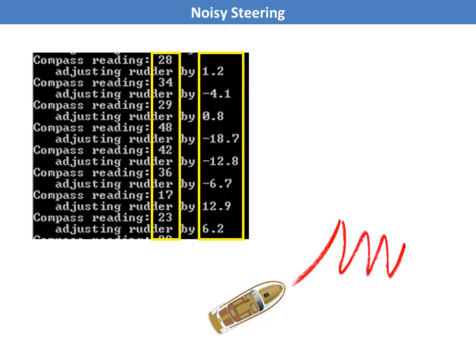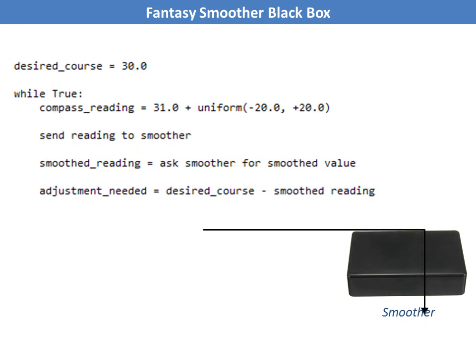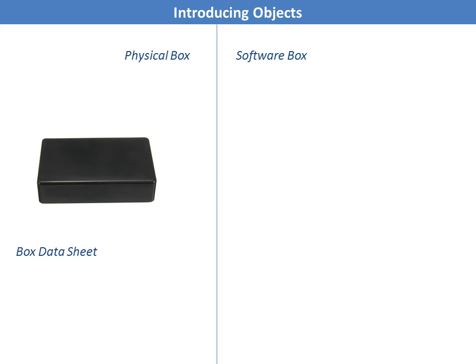It seems we need to process the compass readings with a sort of smoother. Now, if we were designing a machine, we'd go out and buy a smoothing black box and put it in. We'd send each new compass reading into it, ask the box for the new smoothed value to use instead of the single reading we just got, and use it in the calculation. But it isn't a machine, it's software — and the whole point of object-oriented programming is that we can build our software from small separate pieces, so we can do exactly that: create and use a smoothing black box.